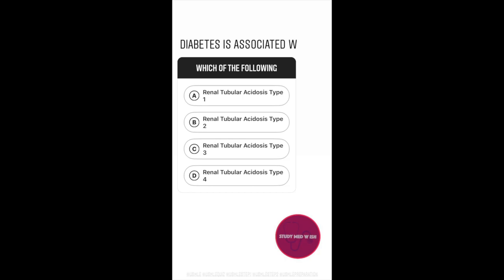Question number two. Diabetes is associated with which of the following? Option A: RTA type 1. Option B: RTA type 2. Option C: RTA type 3. Option D: RTA type 4.